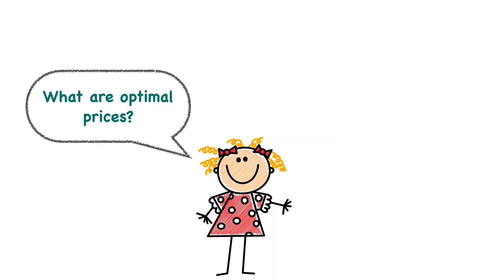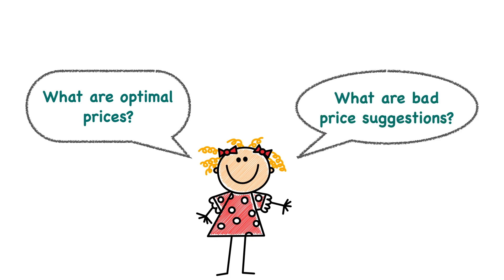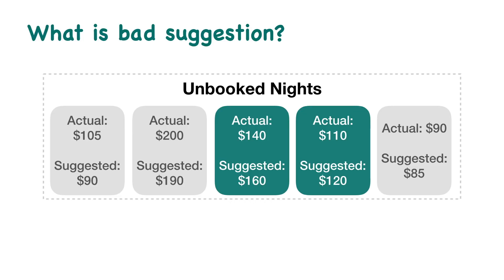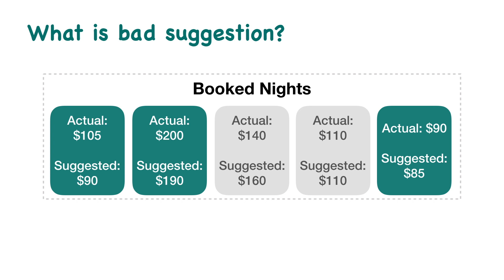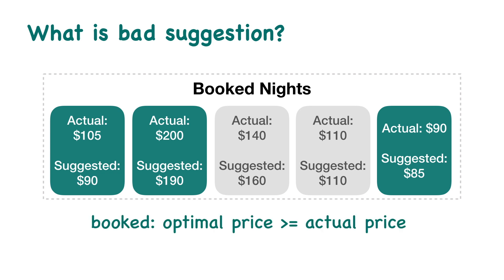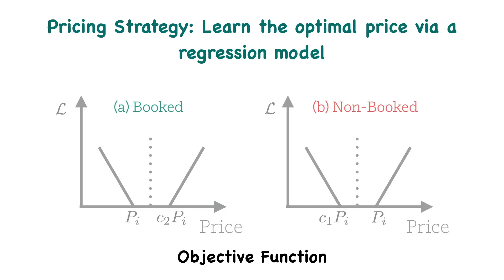Let's take a step back and think about what optimal prices are. This may be hard, so instead let's think about what bad price suggestions are. For this question, we do have some intuitions. For unbooked nights, if the listing is not booked at $140, we don't want to suggest a price higher than that — therefore, the optimal price should be smaller than the actual price. On the other hand, for booked nights, we don't want to suggest prices that are lower than the booking prices — therefore, the optimal price should be greater than or equal to the actual price. Based on these intuitions, we formulate our pricing strategy as a regression model which optimizes for a customized objective function.